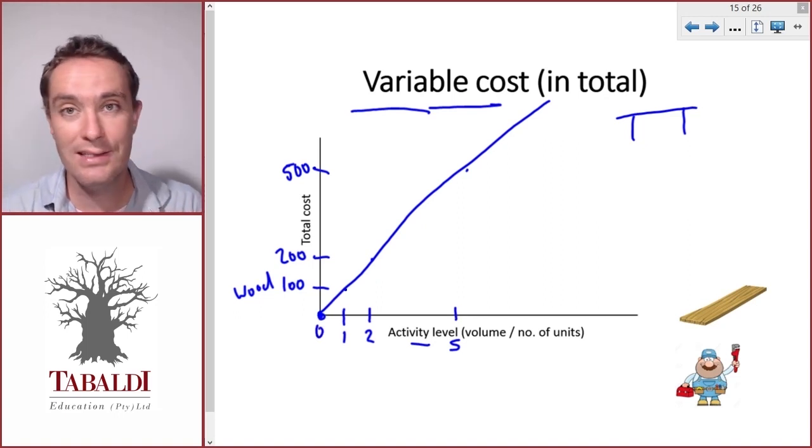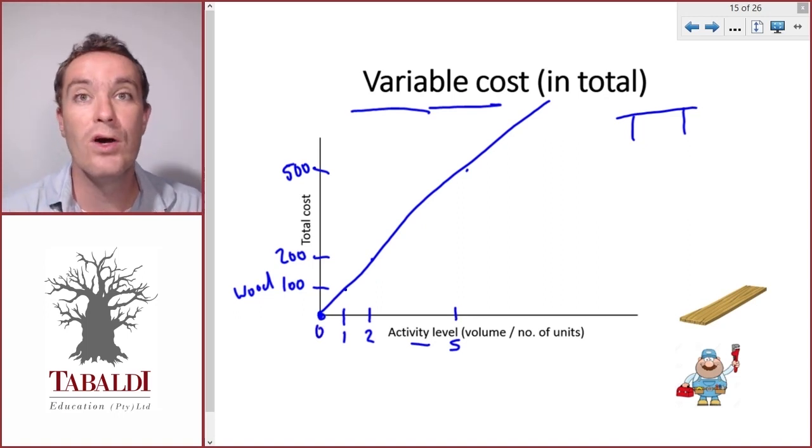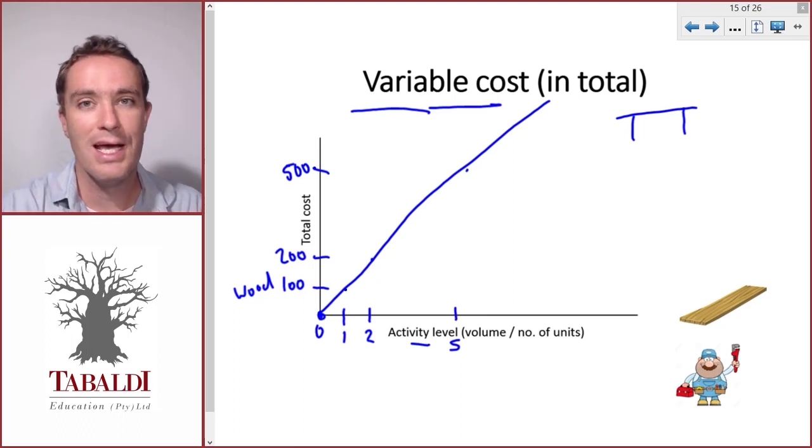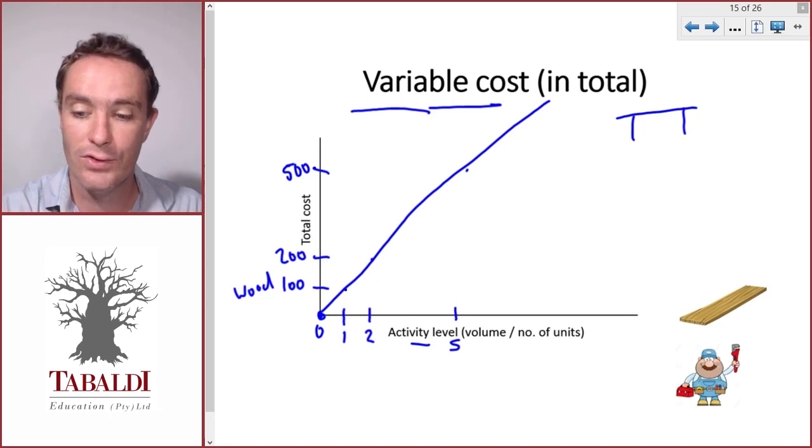That means if we don't make any tables during a specific month we won't spend anything on wood. So that's a variable cost. It varies in direct proportion to the number of units.